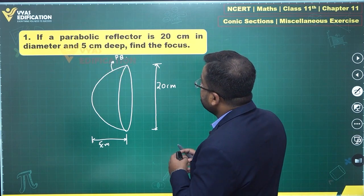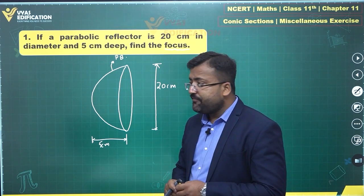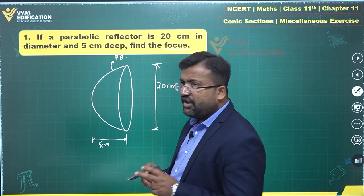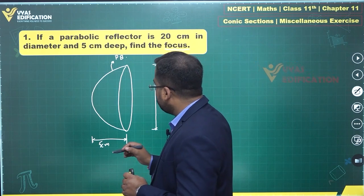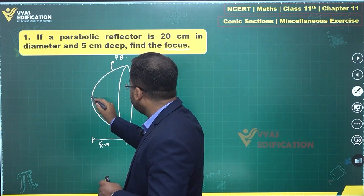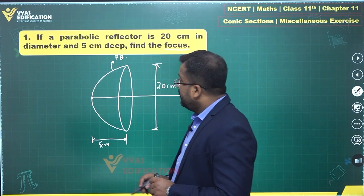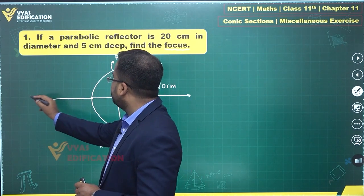Once we want to approach this particular question, find the focus, we are supposed to find the focus of this. Focus will lie along the axis and the axis, as you can see, will be passing through this center and this particular tip, this will be the axis of this parabola.